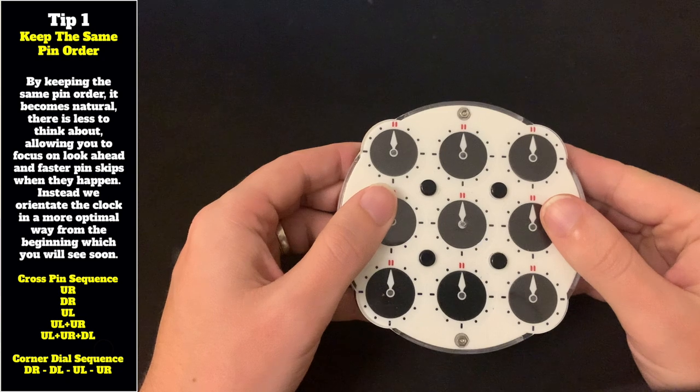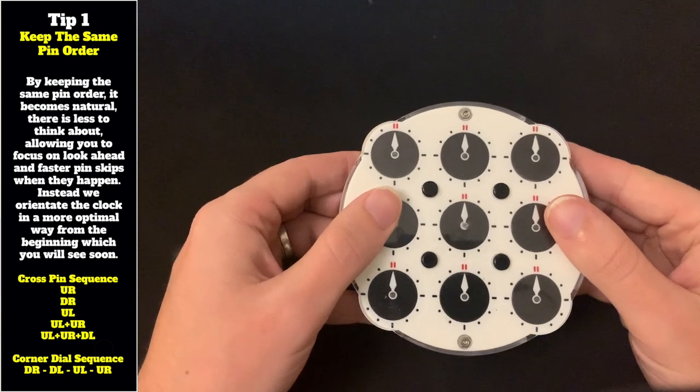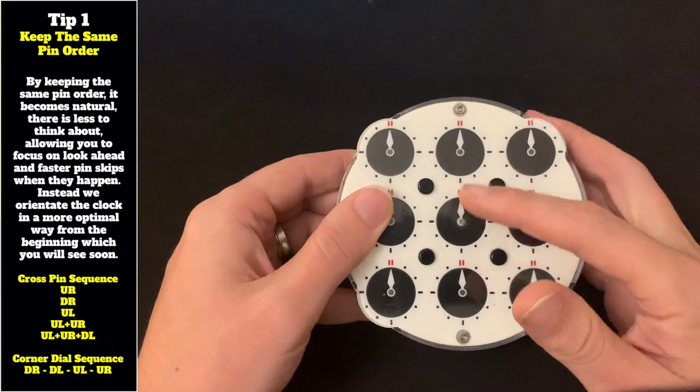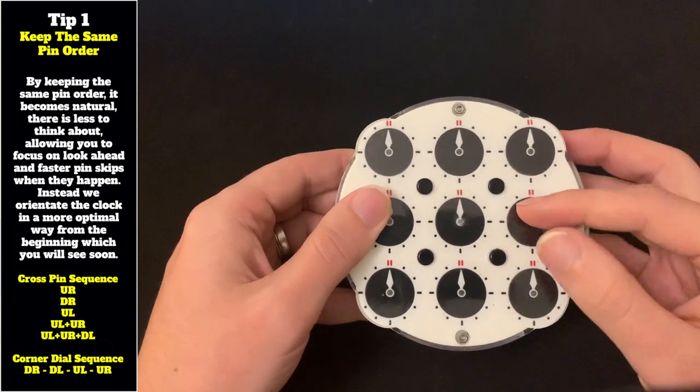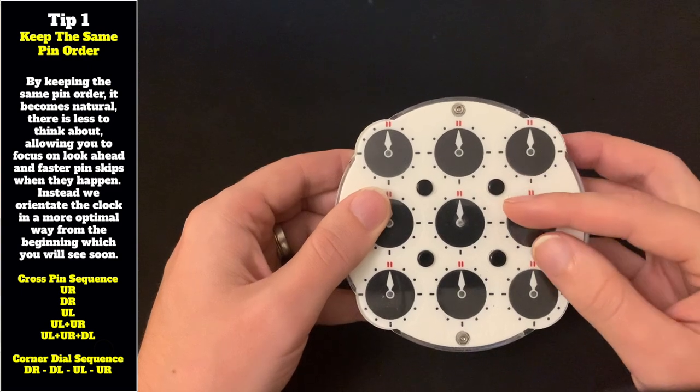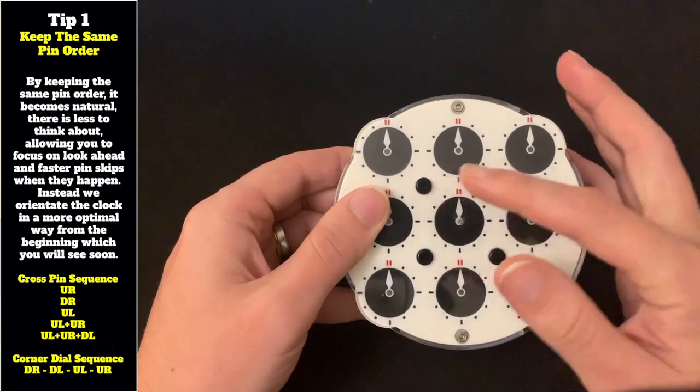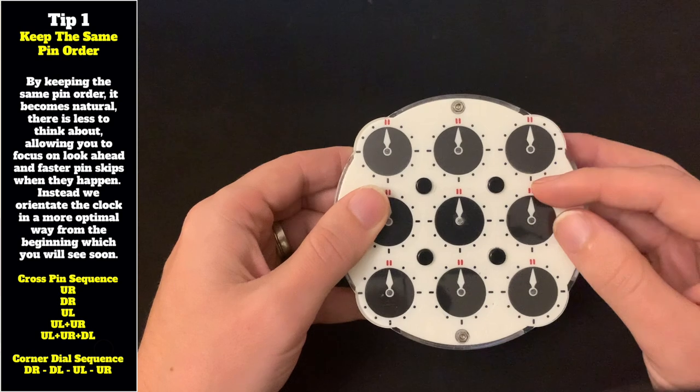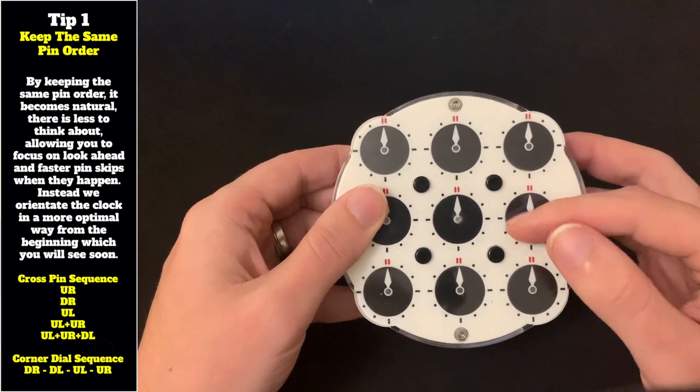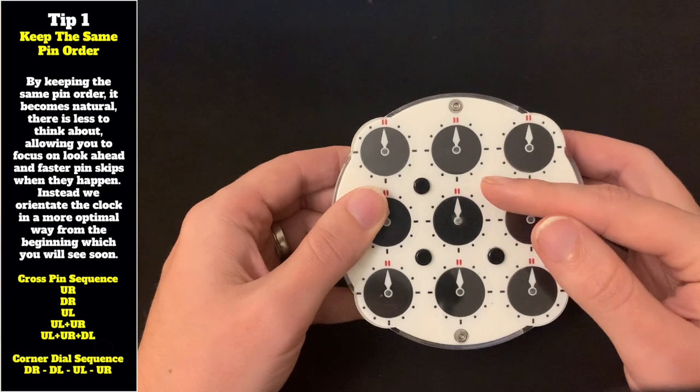The first tip is to keep the same pin order that you use on every solve. Don't try and change the pin order if you think you're going to get a skip or an easier dial, because I find it delays you more trying to remember which pin you need to go to next. If you follow the same ones each time, it becomes muscle memory, and it's easier to get skips quicker because you recognize which pins come straight after.